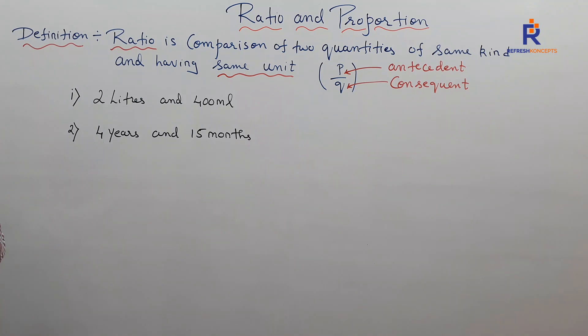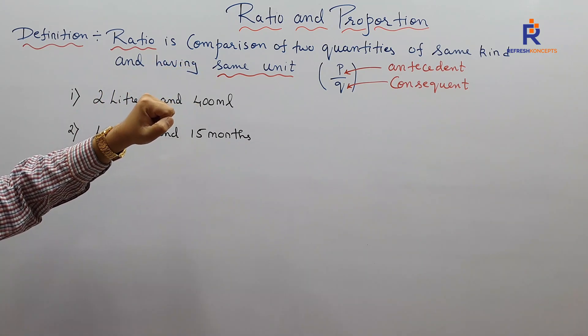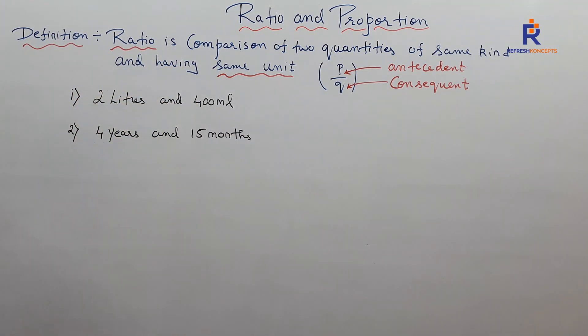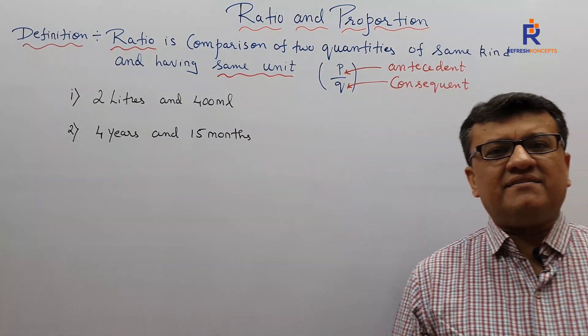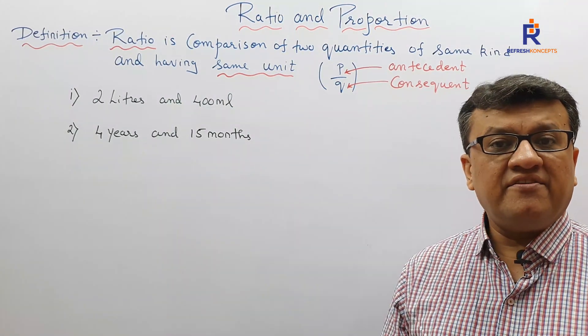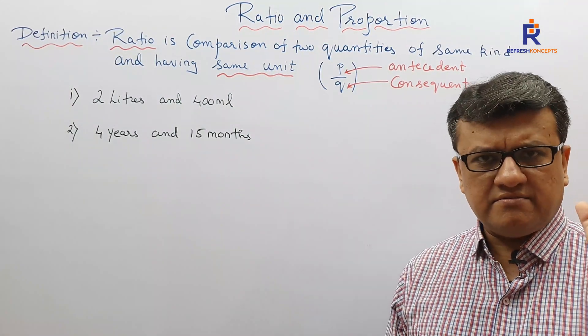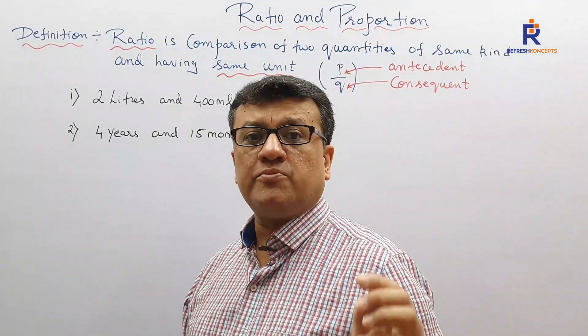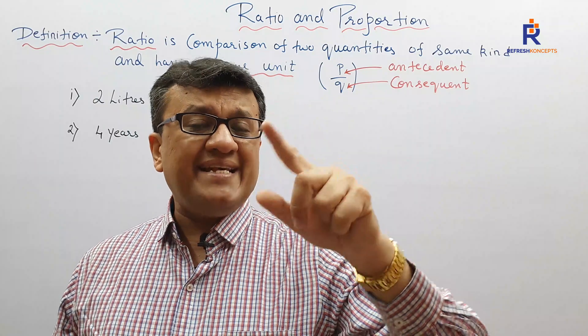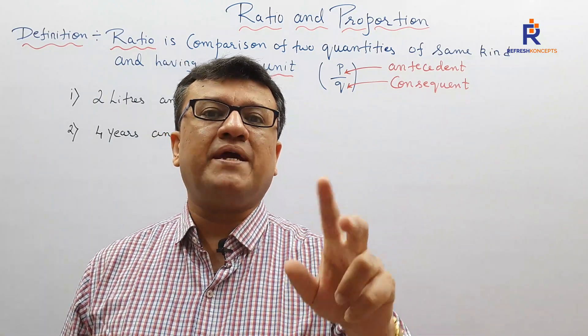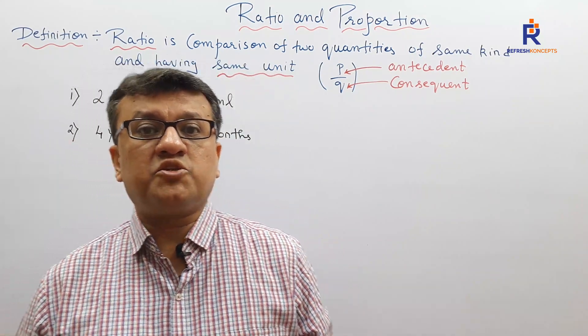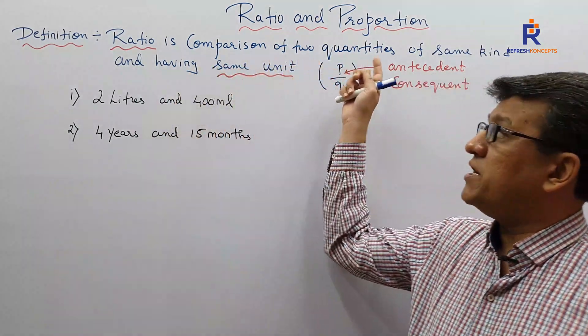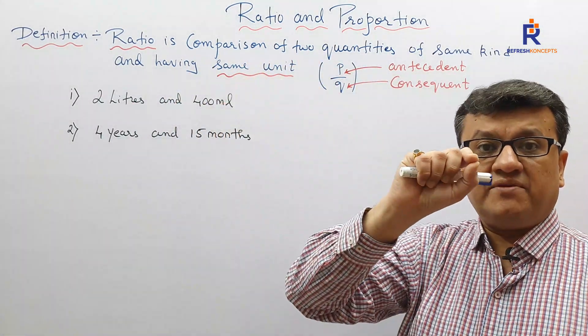Let children understand the meaning, the definition of ratio. Definition: ratio is comparison of two quantities of same kind having same unit. The moment I talk about ratio, children will have this idea - something upon something, numerator upon denominator. You are not wrong if you are thinking that ratio means numerator upon denominator. It's perfectly correct. But when I say numerator upon denominator, that means we are trying to compare two quantities. The main thing is comparison should be done with two quantities having same unit. That is what is very much needed.